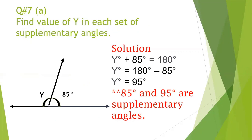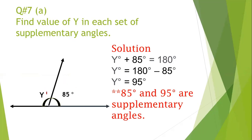Next question: find the value of y in each set of supplementary angles. Here is an angle of 85 degrees and another unknown angle y. We add y plus 85 degrees and it should equal 180 degrees. So y plus 85 equals 180. We move 85 degrees to the other side with a negative sign: 180 minus 85 equals 95 degrees. So y equals 95 degrees, and 85 degrees and 95 degrees are supplementary angles because their sum is 180 degrees.